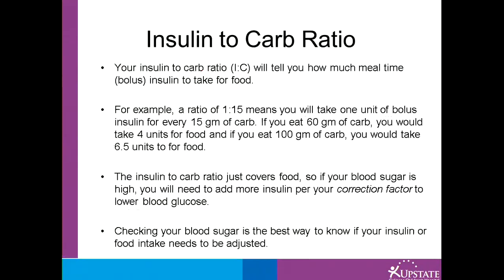Your insulin-to-carb ratio will tell you how much mealtime insulin to take for food. For example, a ratio of 1 to 15 means you will take 1 unit of bolus insulin for every 15 grams of carb. If you eat 60 grams of carb, you would take 4 units of bolus insulin for food. And if you eat 100 grams of carb, you would take 6.5 units for food. The insulin-to-carb ratio just covers food, so if your blood sugar is high, you will need to add more insulin per your correction factor to lower blood glucose. Checking your blood sugar is the best way to know if your insulin or food intake needs to be adjusted.